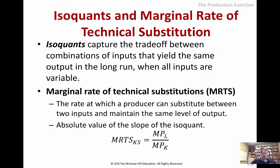Isoquants — it's the combination of inputs that yield the same output. That brings us back to the question: if they yield the same output, which combination is better? Which one is cheaper? So the marginal rate of technical substitution is essentially that tradeoff between the two inputs that would keep us at the same level of production.